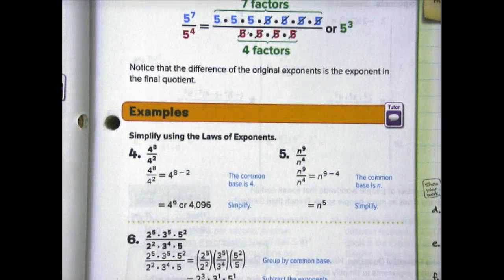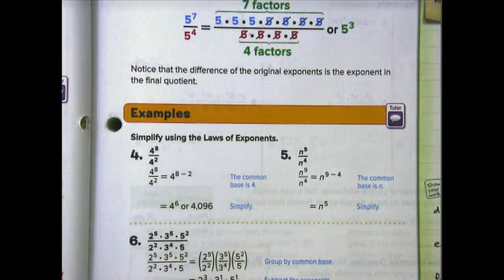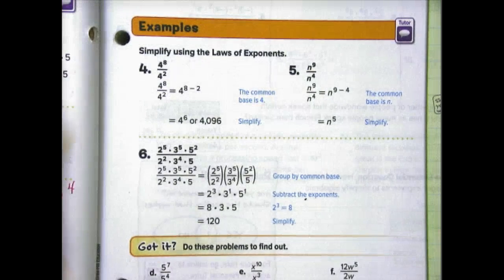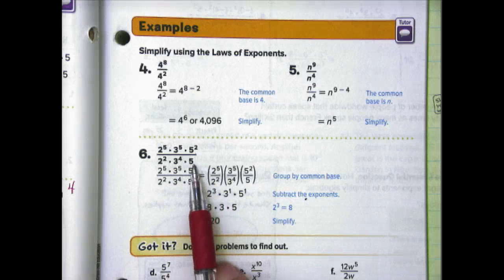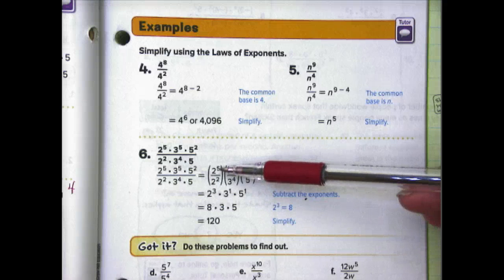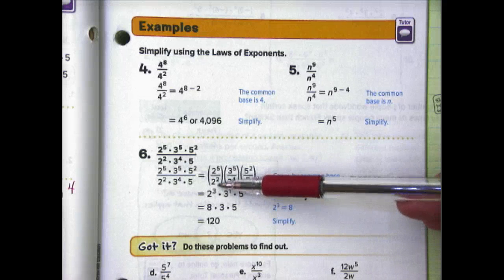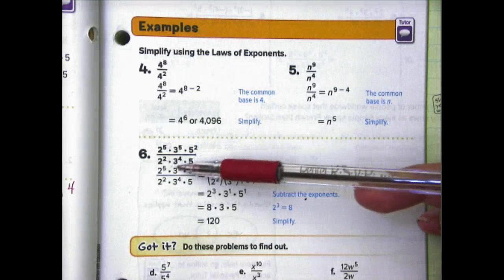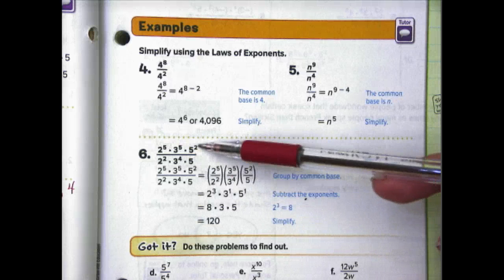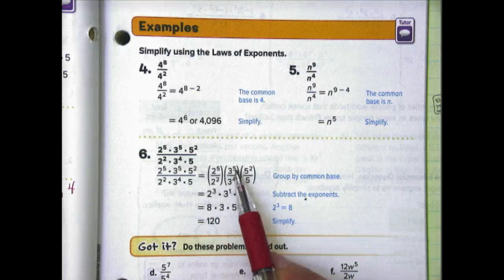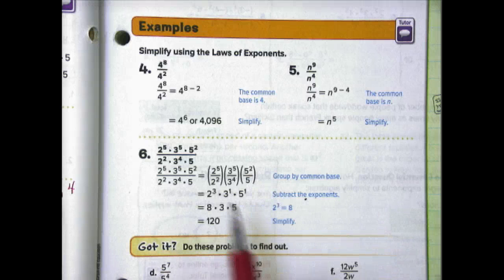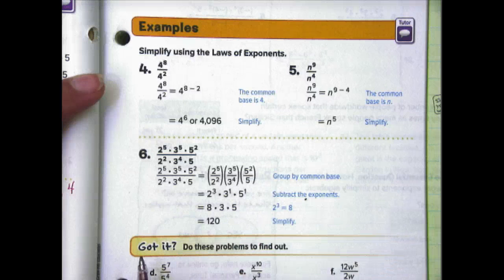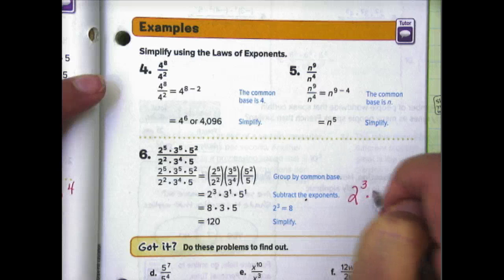Examples 4 and 5 are similar to our math minutes. Let's look at number 6, which is more complex. We have 2 to the fifth times 3 to the fifth times 5 to the second, divided by 2 to the second times 3 to the fourth times 5. Remember that 5 has an exponent of 1. Separate into common bases: 2⁵ ÷ 2², 3⁵ ÷ 3⁴, and 5² ÷ 5¹. Subtracting gives 2 to the third, 3 to the first, and 5 to the first. The answer is 2 to the third times 3 times 5, which equals 120 if you multiply it out.